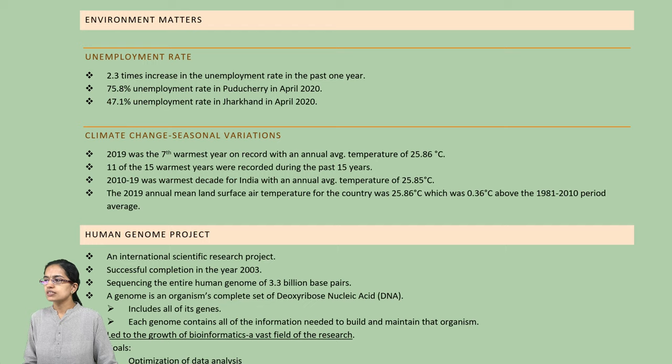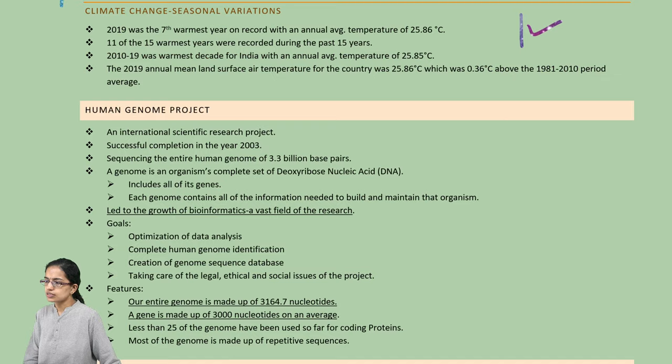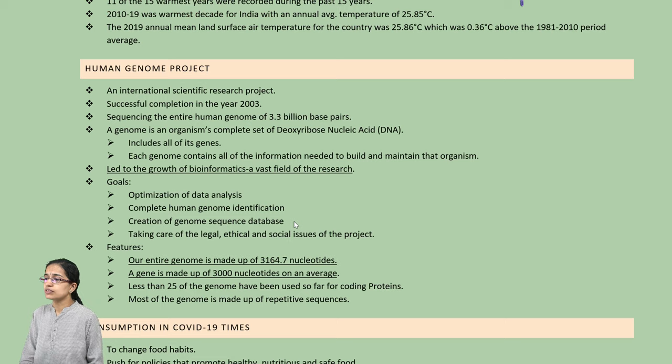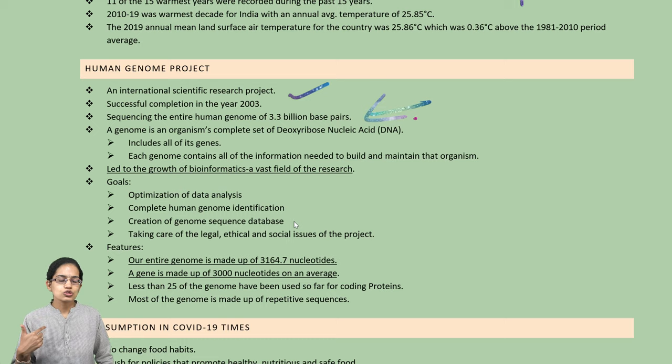The unemployment scenario has been drastically increasing, with a significant jump in the unemployment rate registered. Climate change has been responsible for the increase in average temperatures across the globe. The Human Genome Project's first successful completion took place in 2003, where sequencing of the entire human genome — 3.3 billion base pairs — was done, representing a complete set of DNA including all its genes. This was a landmark achievement in bioinformatics and genome database identification.